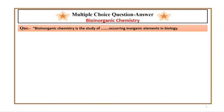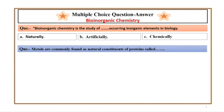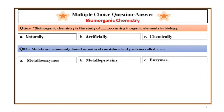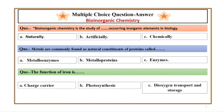Bio-Inorganic Chemistry is the study of dash-dash occurring inorganic elements in biology. Answer: naturally. Metals are commonly found as natural constituents of proteins called metalloproteins. The function of iron is dioxygen transport and storage.